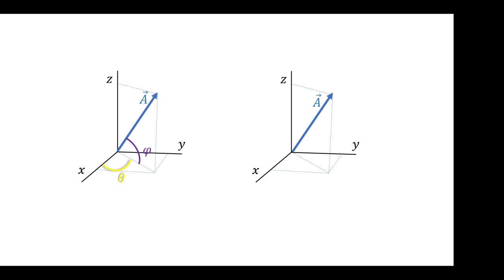In the second type of problem, which we will discuss in another unit, the position of the vector is given — not the angles, but its position. Here, we have point 1, identified by its position on the x-axis, y-axis, and z-axis, called x1, y1, z1 — the origin of the vector. The end of the vector is position 2, with coordinates x2, y2, z2. We will deal with this in the next unit, so let's focus first on problems involving angles.